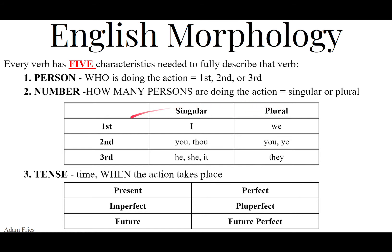Number describes how many persons are doing the action, either singular or plural. First person singular means I — I am doing the action. Second person singular means you are doing the action, or thou. Third person singular is he, she, or it. So first person singular is I.